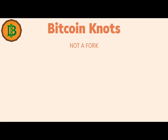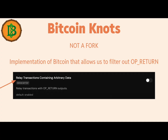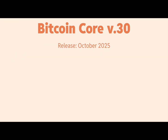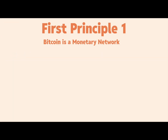Bitcoin Knots is not a fork — it's another implementation of Bitcoin. It allows us to filter out OP_RETURN so that as node runners we have a choice. If we run Bitcoin Knots, we can choose not to relay transactions containing arbitrary data. It also allows us to set the maximum size of OP_RETURN data in bytes — for example, setting it to 42, which was the original limit in the first version of Bitcoin.